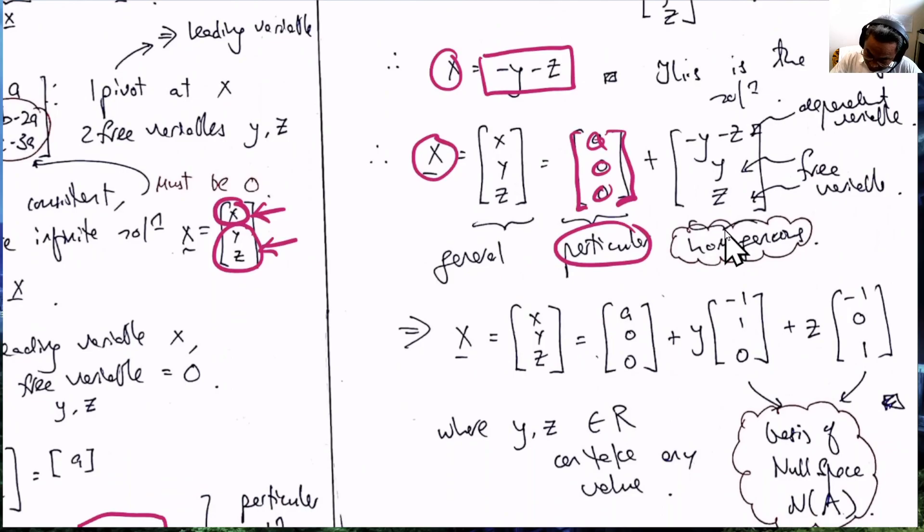And now to set this solution in parametric form, what we do is that we simply copy down the particular solution. And for the homogeneous solution, what we do is that we let the variable Y comes out here and we find that this becomes minus 1.